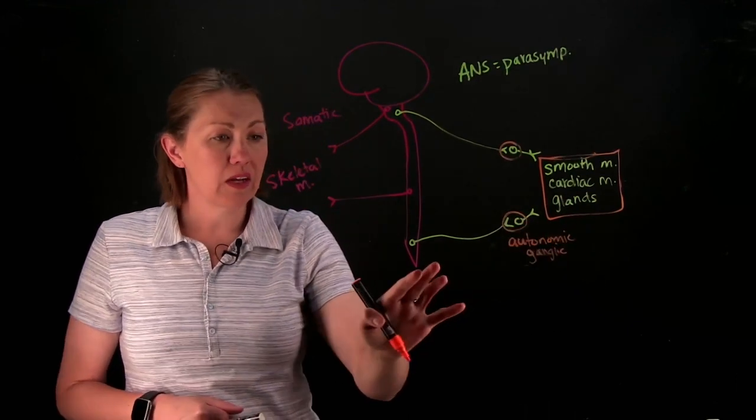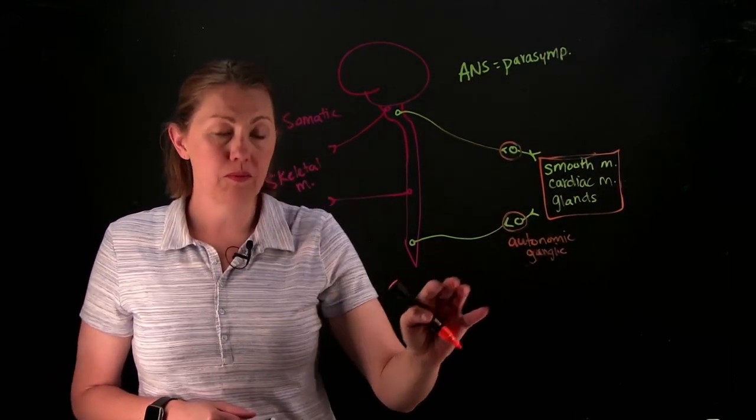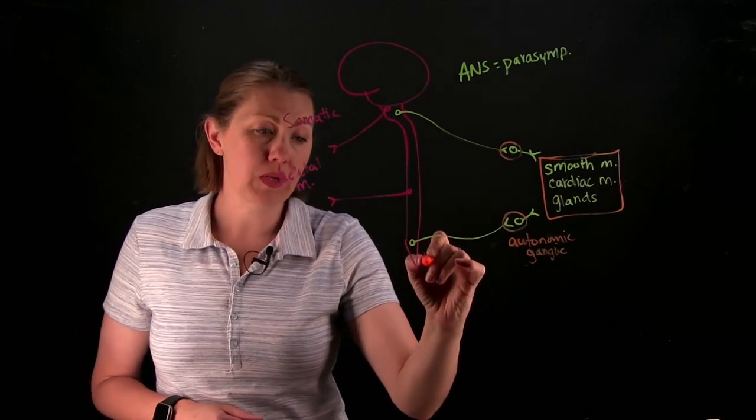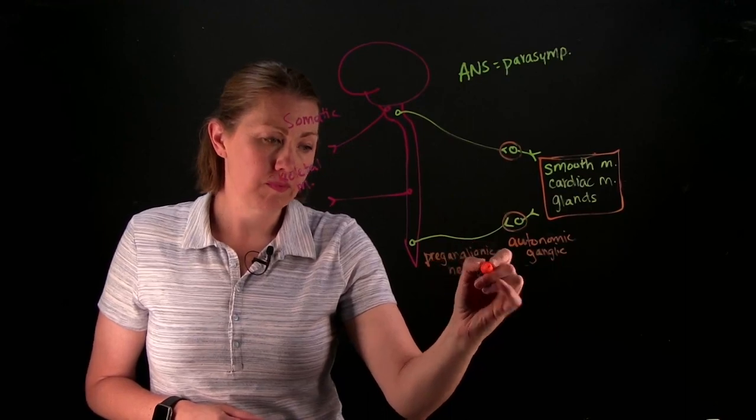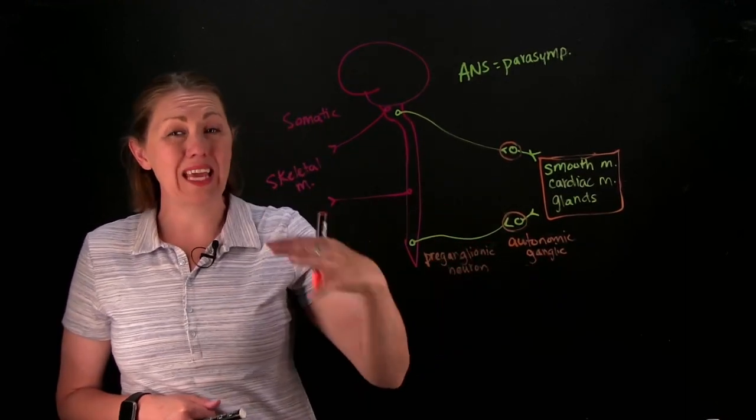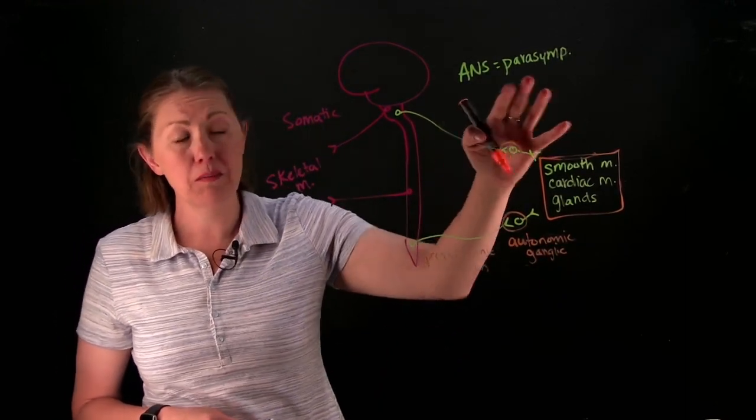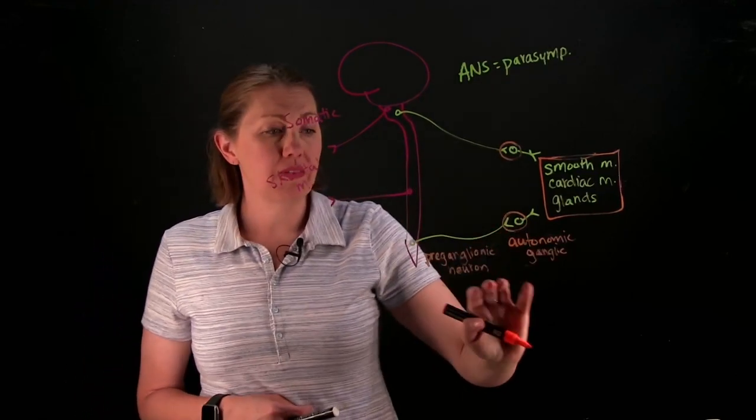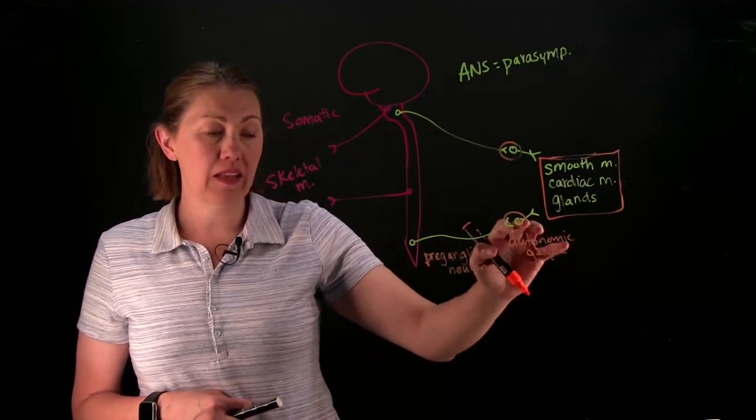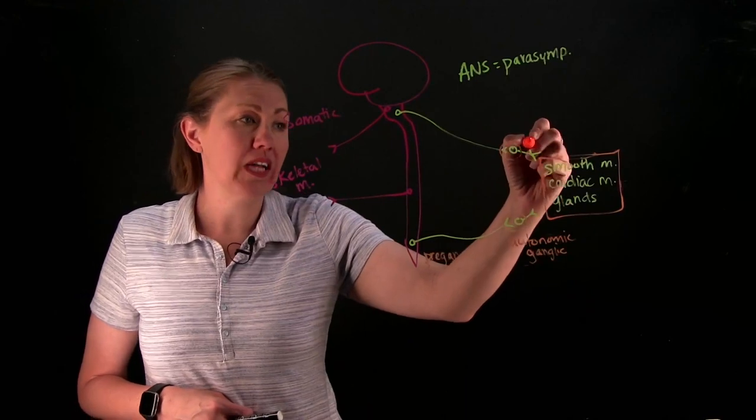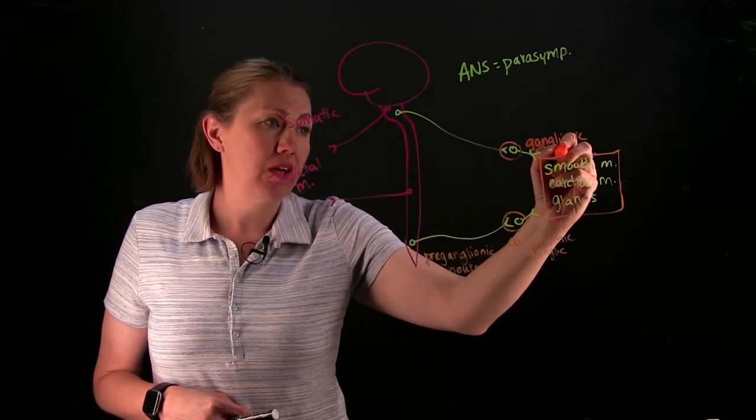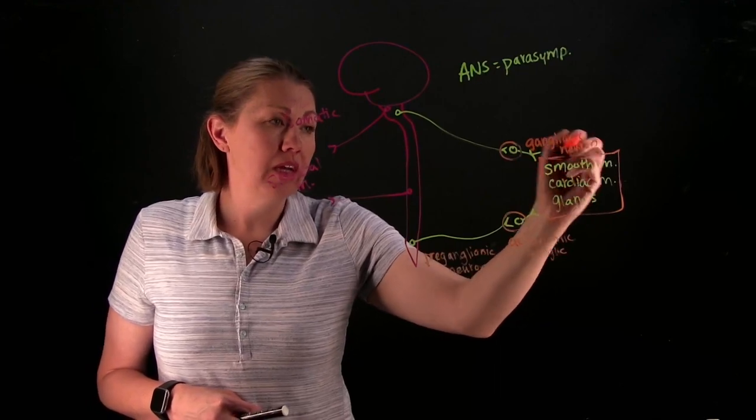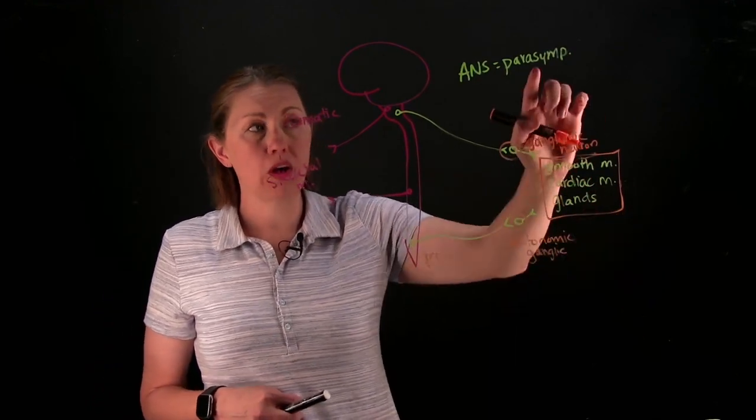The cell that goes to it is before the ganglia, so this would be a preganglionic neuron. Remember, these terms are going to be the same. It doesn't matter if you're talking sympathetic or parasympathetic. The cell after the ganglia, the one that comes from the ganglia, this is called a postganglionic. A postganglionic neuron is close to the target if you're talking parasympathetic.